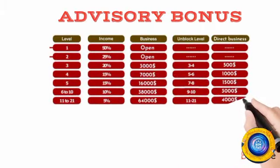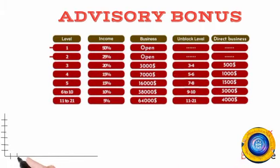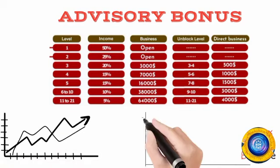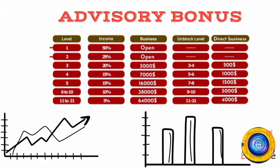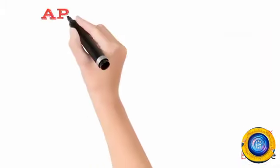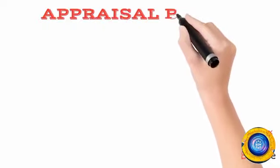Advisory bonus total first to 21 level. First level 5%, second level 25%, third level 30%, 4.5 to 20 mile - 45% total profit. Appraisal bonus is a very big bonus opportunity.